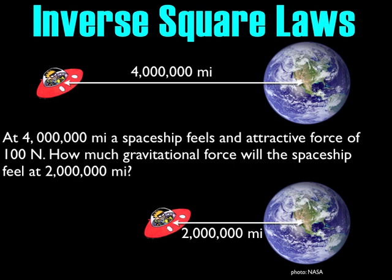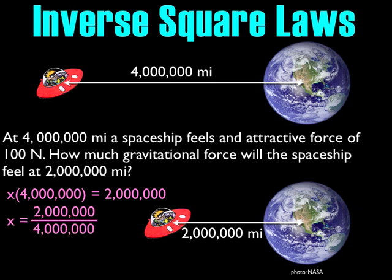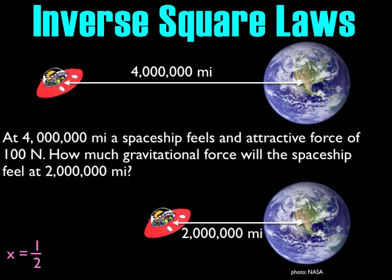I've got to figure out the factor of change - I'm not given it this time. What number times 4,000,000 equals 2,000,000? That number is 2,000,000 divided by 4,000,000, or just one-half. So the factor of change is one-half.